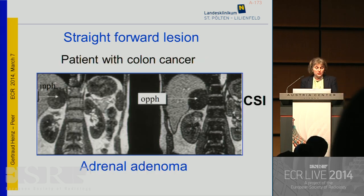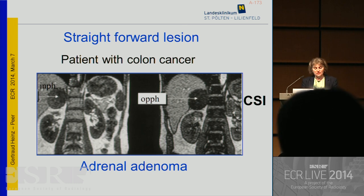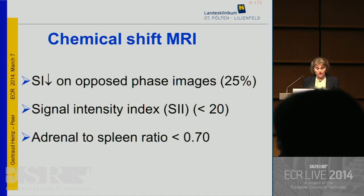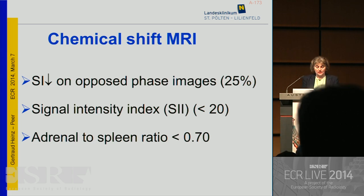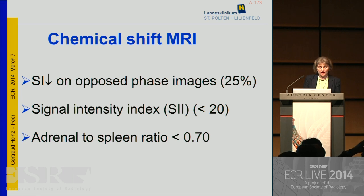We can also perform chemical shift MRI in a patient with underlying colon cancer, doing in-phase and opposed-phase sequences. If you see a signal drop on the opposed-phase image, this is clearly indicative of an adrenal adenoma. A drop of signal intensity of at least 25% indicates the presence of an adenoma. You can also calculate the signal intensity index — if this index is below 20, it's most likely a benign lesion. You can also calculate the adrenal-to-spleen ratio; if it is below 0.7, we are dealing with a benign lesion.